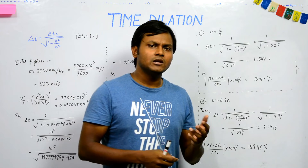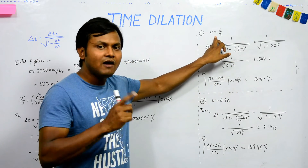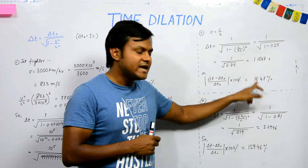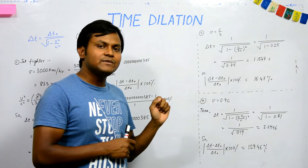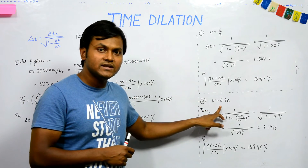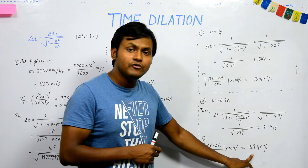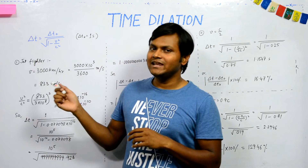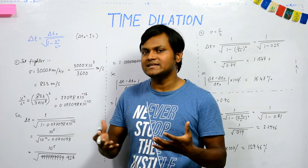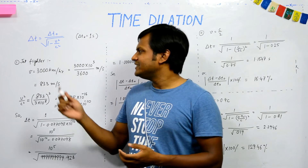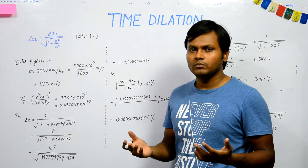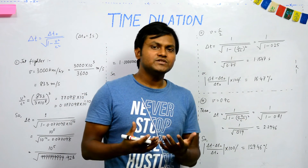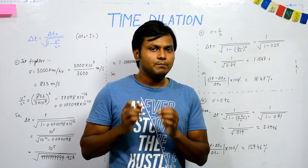But if we consider a particle moving at half the speed of light, the difference comes out to be on the order of 15%. And for a particle moving at 90% the speed of light, the time dilation is about 129.46%. So in normal life with velocities much less than the speed of light, time dilation effects are insignificant, but near the speed of light they become quite significant.